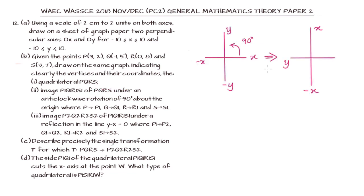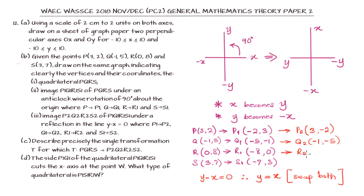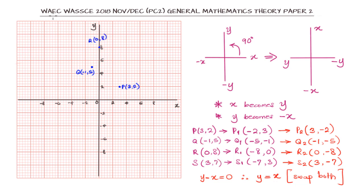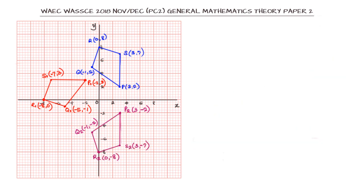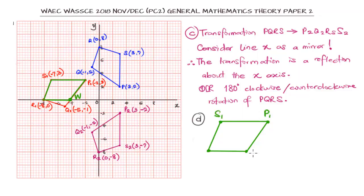In this video we're going to be looking at one of the questions from WAEC 2018 November/December Mathematics paper. We are going to be working with the transformation of shapes — specifically the anti-clockwise rotation of a quadrilateral by 90 degrees, and then we want to look at the transformation y minus x equals zero.